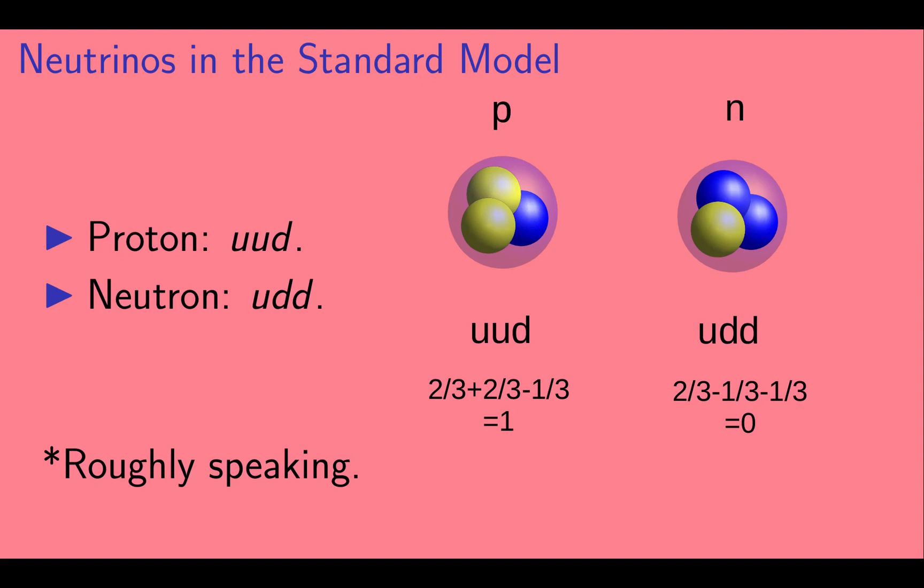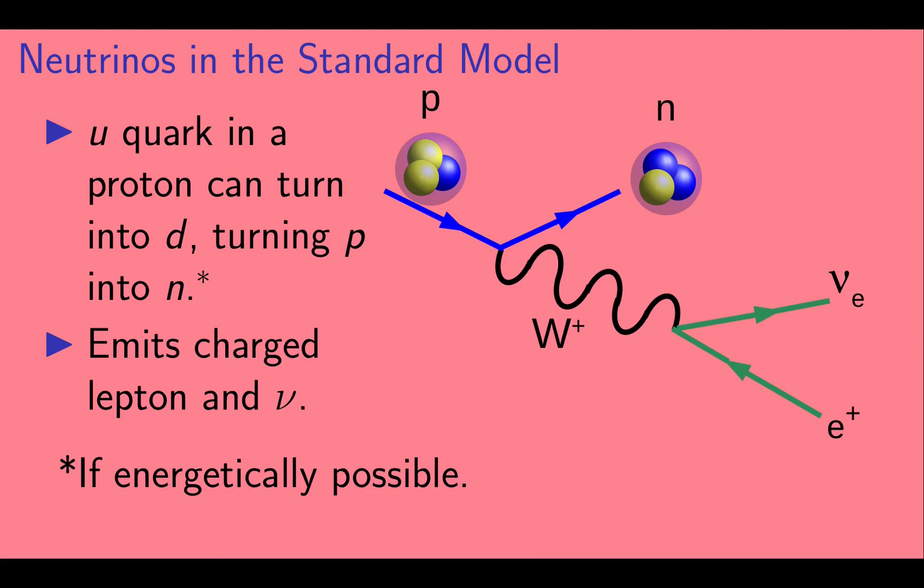Now, let's see how that relates to what we saw before. In a nuclear process, an up quark in a proton can turn into a down quark, turning the proton into a neutron. In doing so, it emits a positron and an electron neutrino.